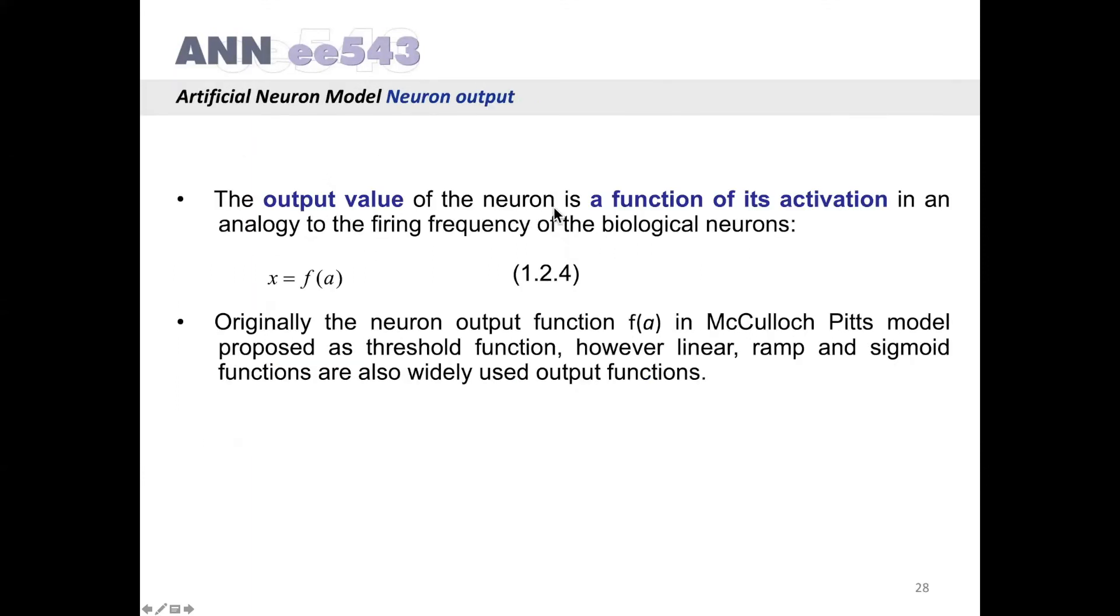The output value of the neuron is a function of its activation in analogy to the firing frequency of biological neurons. That is, x, this is the output, is a function of the activation. Originally, the neuron output function fA in McCulloch-Pitts model was proposed as a threshold function. However, linear, ramp, and sigmoid functions are also widely used output functions.